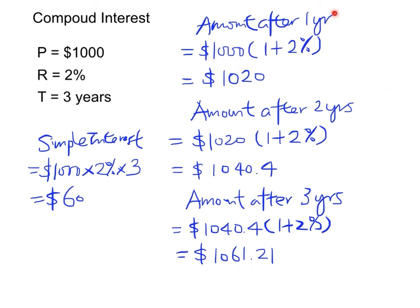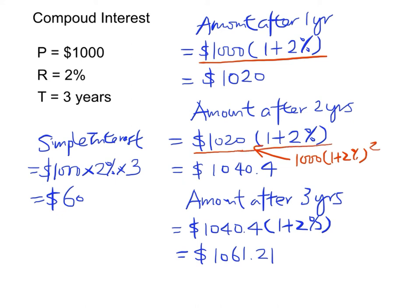These steps are a bit complicated and too long. Actually, we can summarize this with just one formula. When we calculate the amount after two years, we use the amount after one year as the principal. And $1,020 is actually the product of $1,000 and (1 plus 2%). Therefore, we can write this as $1,000 times (1 plus 2%), and then multiply again by (1 plus 2%), giving $1,000 times (1 plus 2%) squared. Similarly, $1,040.40 equals $1,000 times (1 plus 2%) squared.